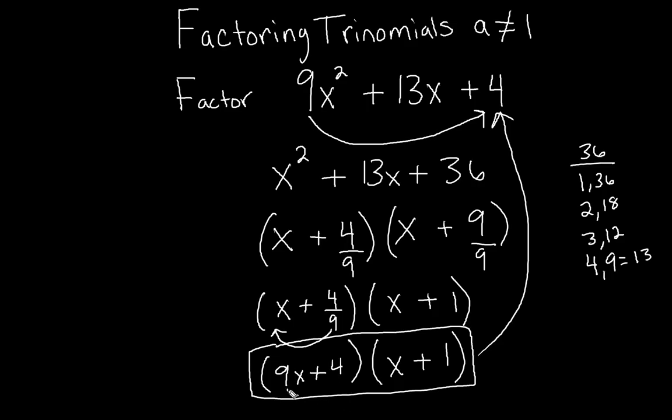If we multiply the first term by the first term, that gives us 9x squared. Multiply the outside by the outside, that gives us a positive 9x. Multiply the inside times inside, gives us a positive 4x. And multiply the last term by the last term, gives us a positive 4.